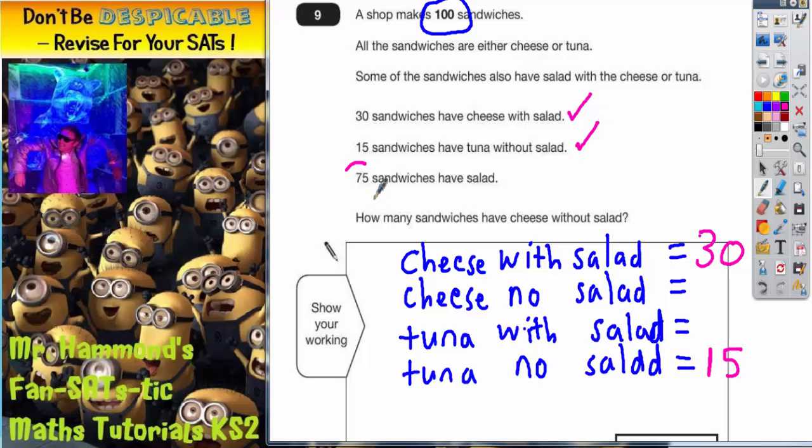Now we are told, this is the crucial clue, 75 sandwiches have salad. So these two types of sandwich are the ones with salad. Now we've already got 30 sandwiches with salad.